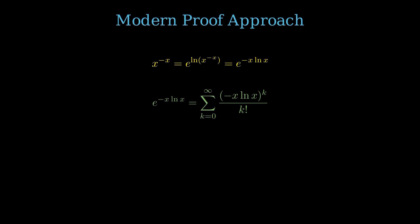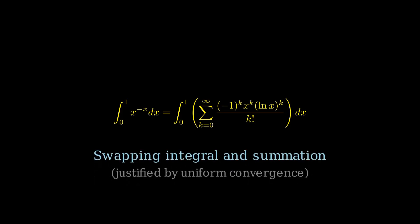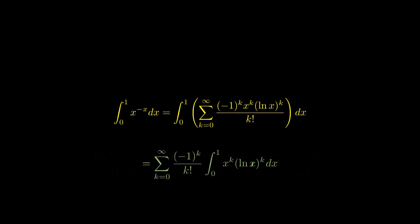Next, we integrate this series representation of x to the negative x from 0 to 1, the integral from 0 to 1 of the sum from k equals 0 to infinity of negative 1 to the k times x to the k times natural log x to the k over k factorial with respect to x. Thanks to the property of uniform convergence for this series, we'll skip the heavy details. We can swap the integral and summation signs.